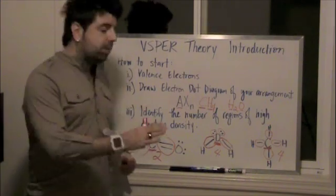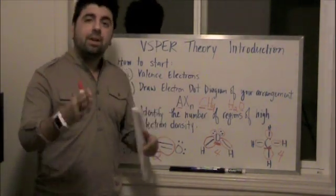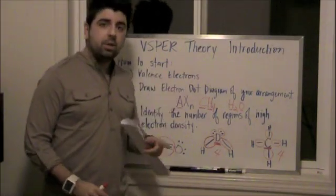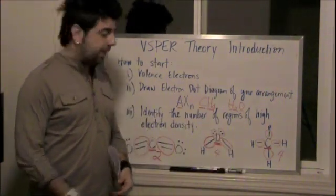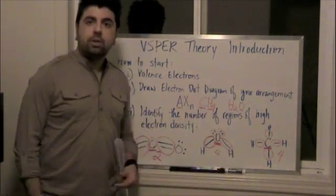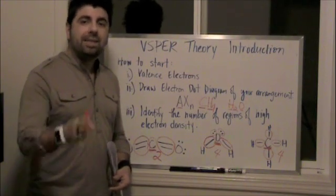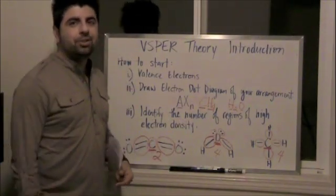So those are the keys to pretty much being able to identify what shape, in terms of the VSEPR theory, will allow you to identify each one of your atoms and each one of your molecules that you'll be drawing. So stay tuned for the next video, next part, that will look at the different shapes. Thank you for watching.